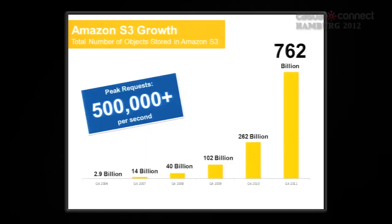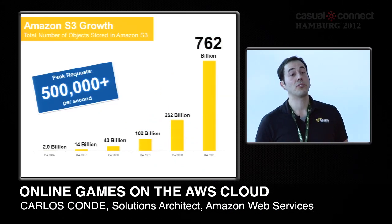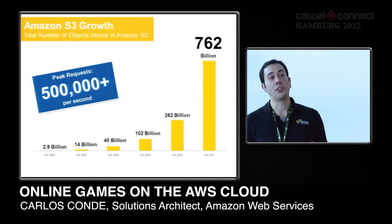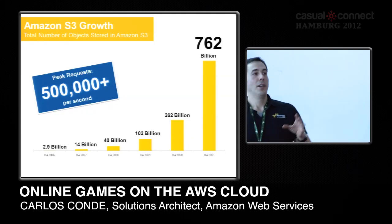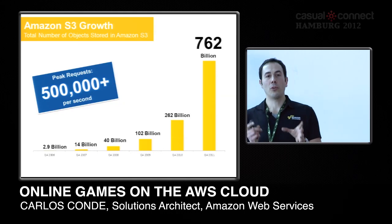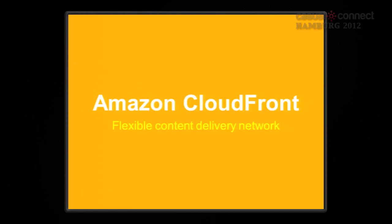Here are the latest numbers: more than half a trillion objects are stored on Amazon S3, and at peak times we serve more than 500,000 requests per second. So if you put your static game client on Amazon S3, there's no problem — all the players you need will be able to download your game.